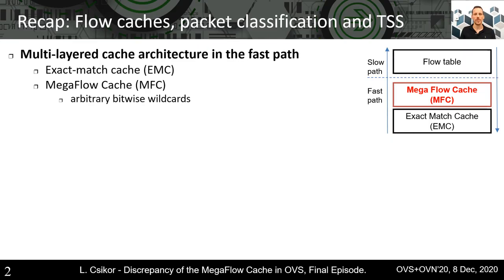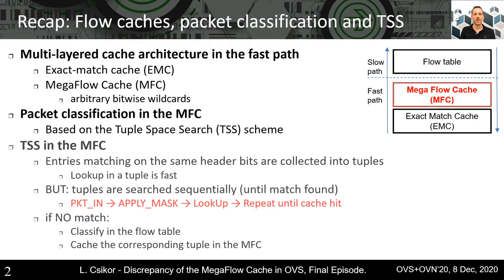As we all know, OVS implements a multi-layered cache architecture in its fast path. While in the exact match cache, as its name suggests, flows are cached by hashing their whole packet headers as they appear, in the MegaflowCache arbitrary bitwise wildcarding is allowed. This requires a more complex data structure and packet classification algorithm.